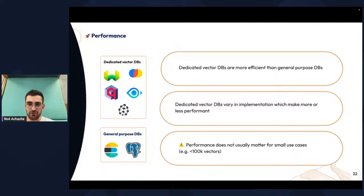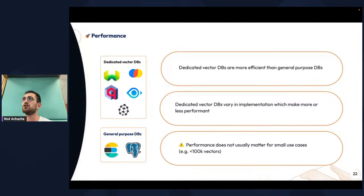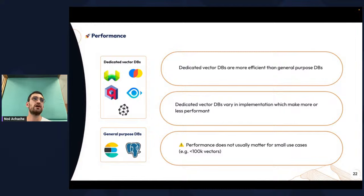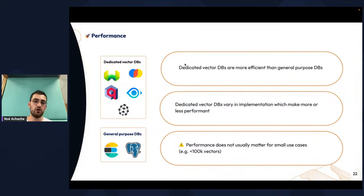Performance does not usually matter for small use cases. A lot of people use vector databases for Q&A of documents when they have a thousand or a few thousands of documents — that's a small use case and you don't really have to bother about performance. They will all be very performant, including general purpose databases. The performance difference between dedicated and general purpose databases really shows when you get to millions of vectors. So if you already have PostgreSQL or Elasticsearch in your stack and only want to index a few thousands of vectors, don't bother bringing another tool to your stack.